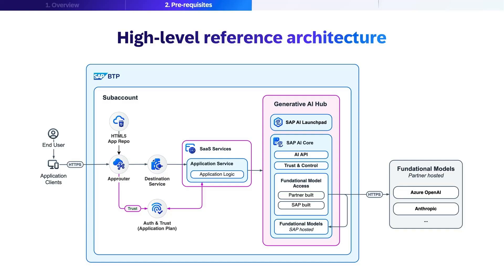Let's examine the high-level reference architecture for accessing generative AI models through SAP BTP. The diagram shows the complete flow from end-user to foundational models. Starting from the left, we see end-users and application clients connecting via HTTPS to the SAP BTP environment within the subaccount. The request first passes through an app router connected to an HTML5 application repository. The request then flows to a destination service, which directs it to the software-as-a-service service containing the application service with the core application logic. Authentication and trust are managed through the auth and trust components. From there, another destination service forwards the request to the generative AI hub.